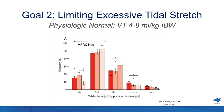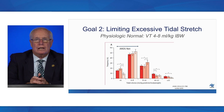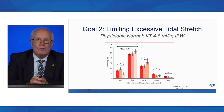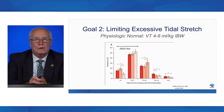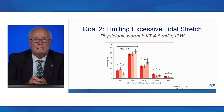Let's look at goal number two: limiting excessive tidal stretch. The physiologic normal tidal volume is around 7 mL/kg, with a safe range of 4–8 mL/kg ideal body weight. The Lung Safe Study shows we're not doing as well here. While the majority are getting tidal volumes less than 8 mL/kg, there is a significant minority in the 8–10 range, and even a significant number above 10 and even above 12 mL/kg ideal body weight. We're good on plateau pressures, but not so good on tidal volumes.